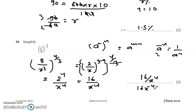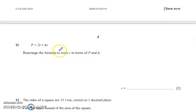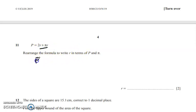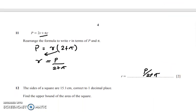Question 11: rearrange the formula and write r in terms of p and π. We have p = r(2 + π). Since r is a common factor, shifting it: r = p / (2 + π). That is our final answer.